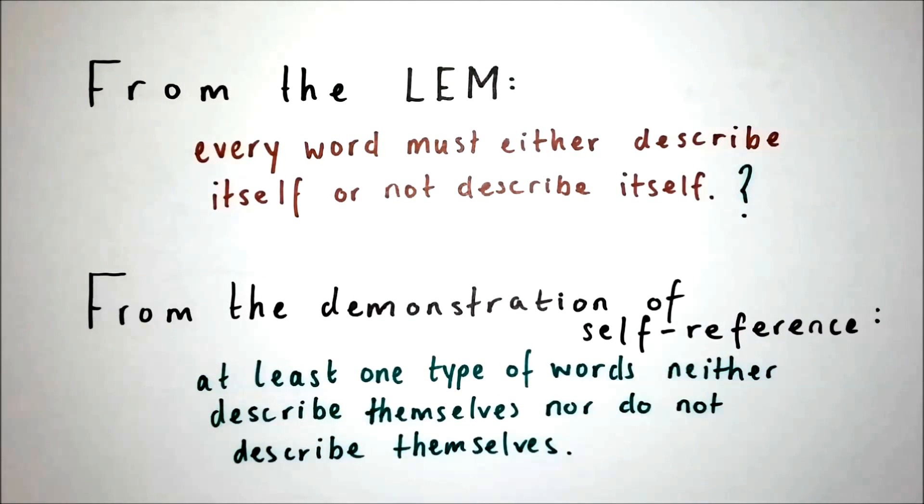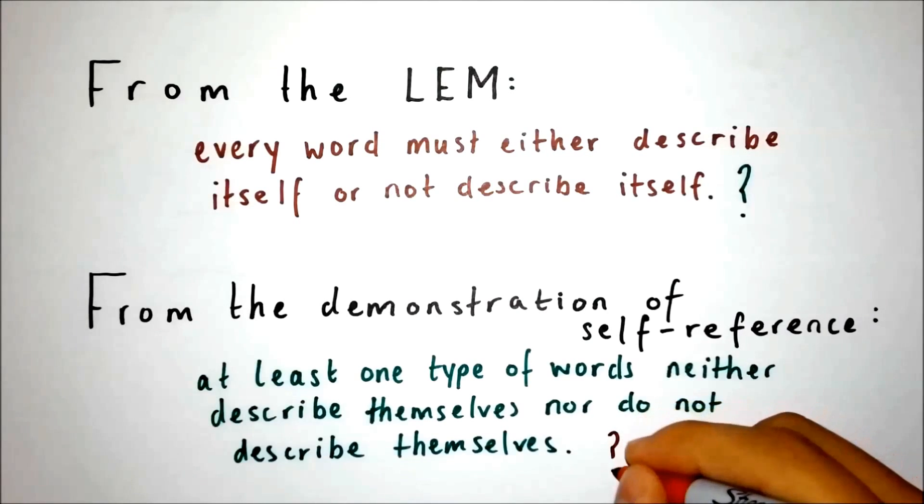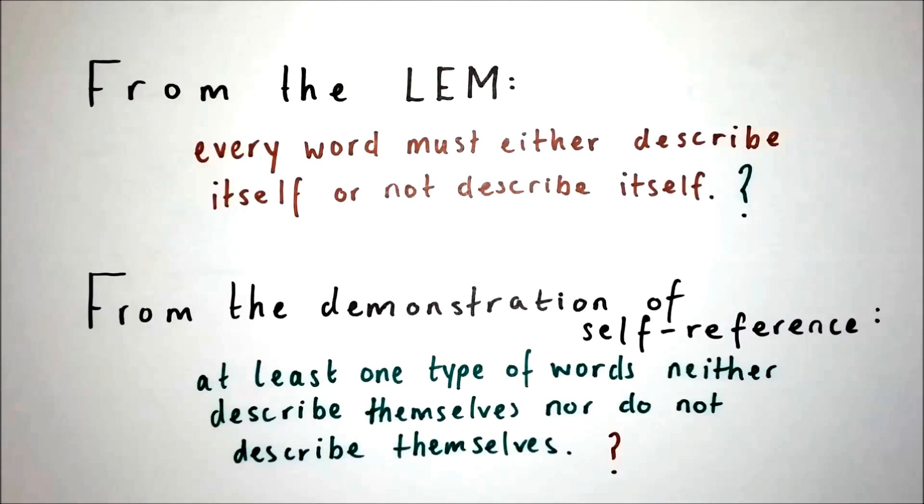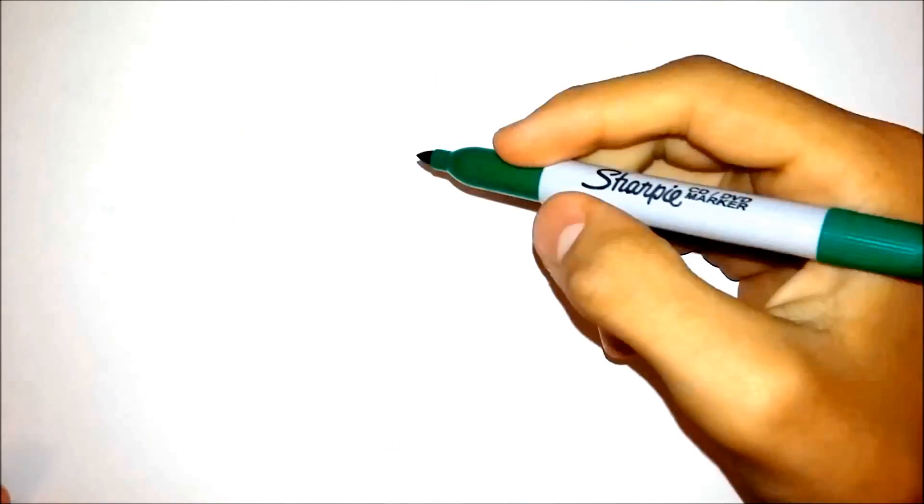But surely this cannot be right. For if we decide to make this conclusion for one object of logic, we must make the conclusion for the whole of philosophy itself. And we know for sure that most true statements do indeed follow the law of excluded middle. And so the law of excluded middle cannot be false after all. Hence the paradox.